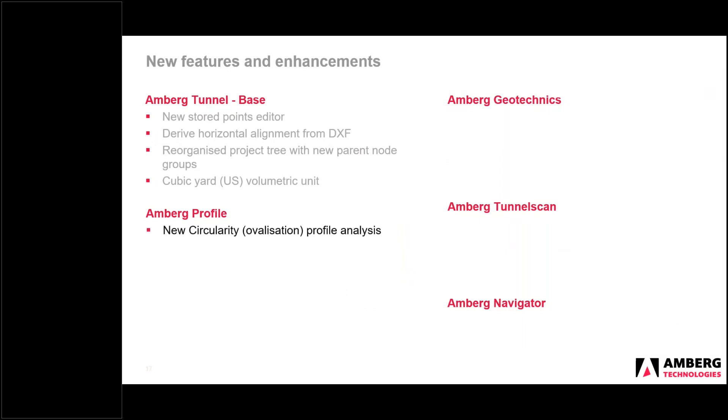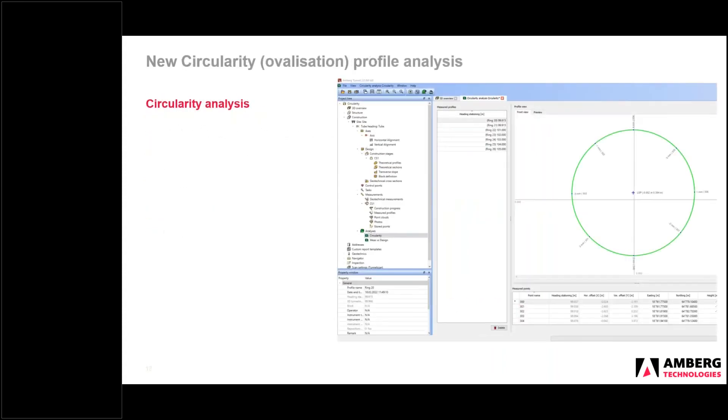Okay, so Amberg profile. We have now a new circularity or ovalization profile analysis. So we'll take a look at this now. So this is the profile view of the analysis. And in the analysis node of the project tree, you can right click, or if you have control profile plus module, and you can create a circularity analysis. And it will take the profile points, and it will fit a circle to the points. So this is an independent analysis of the actual theoretical design.